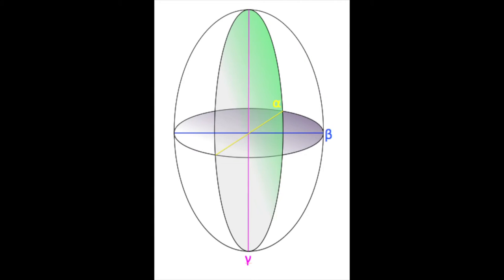For biaxial minerals, all three principal axes are different. We label our principal axes as alpha, beta, and gamma. For biaxial minerals, alpha always has the smallest index of refraction, and gamma always has the largest index of refraction. The index in between is beta.